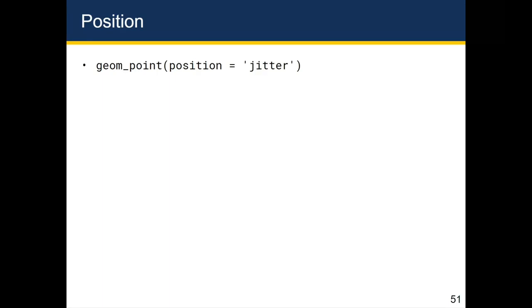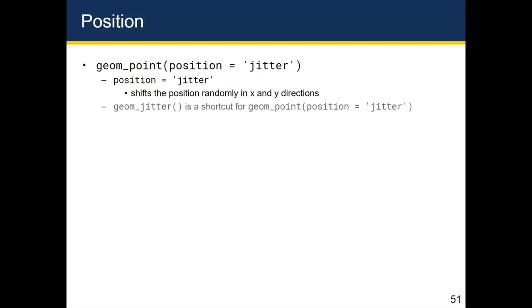In the example of geom point, we might want to use position equals jitter to bring out the difference in the points or minimize the overlap. And so we can specify the position inside the geom point function, which will then modify how the geom point function plots the points. And what position equals jitter is doing is randomly shifting the position of the points in both the x and y axis. And since this is such a commonly performed operation, there's actually a geometric object called geom jitter, which is basically a shortcut for doing this.